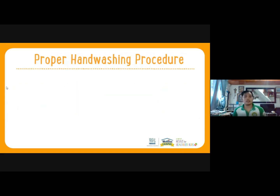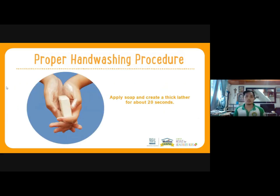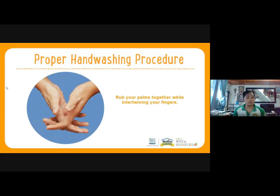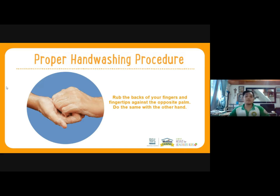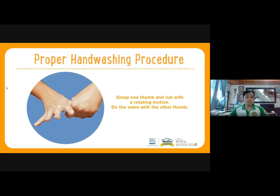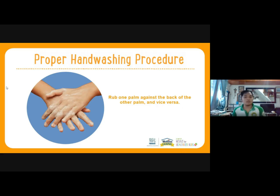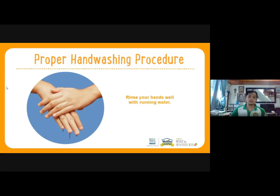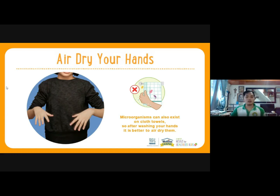Just putting soap and rubbing your hands together and rinsing off the soap does not ensure that all microorganisms will be washed away. There is a proper way to wash your hands. First, apply soap and create a thick lather for about 20 seconds. Next, rub your palms together while intertwining your fingers. Then rub the backs of your fingers and fingertips against the opposite palm — do the same with the other hand. Afterwards, grasp one thumb and rub with a rotating motion — do the same with the other thumb. Follow that with rubbing one palm against the back of the other hand and vice versa. Lastly, rinse your hands with running water. Remember, microorganisms can also exist on cloth towels, so after washing your hands it is better to air dry your hands.